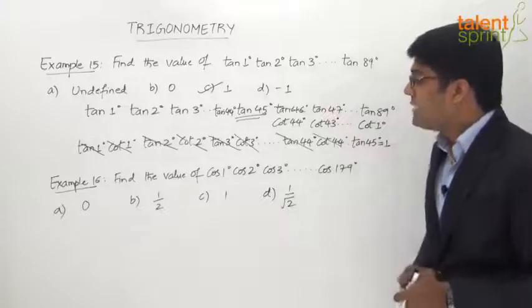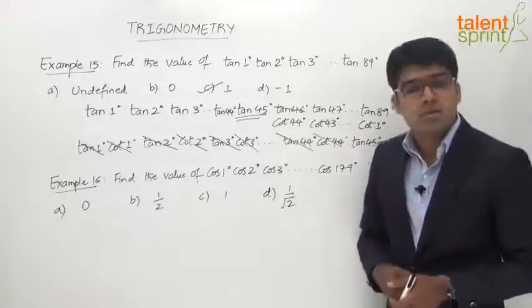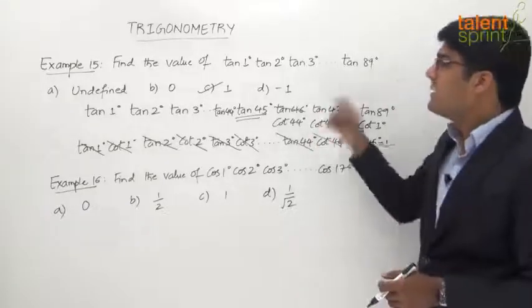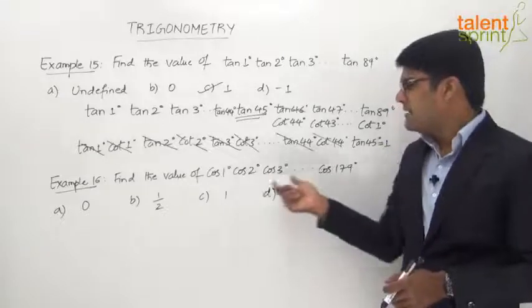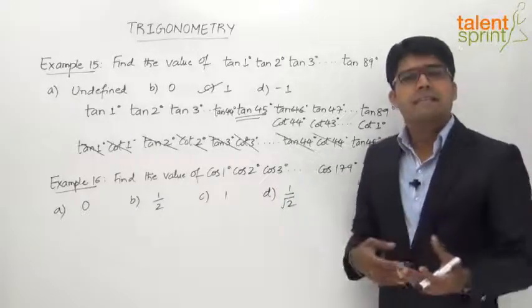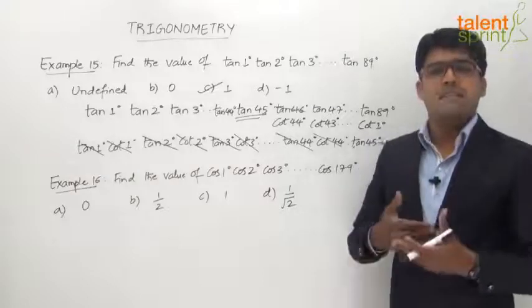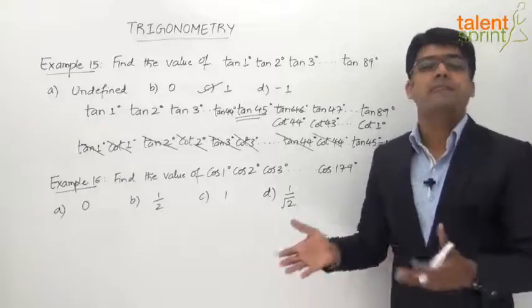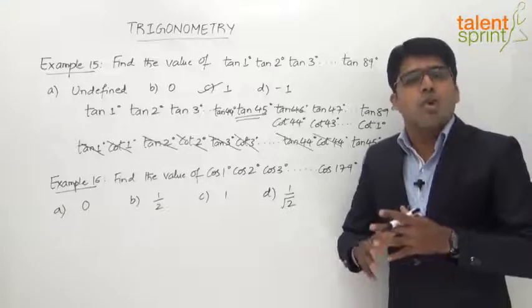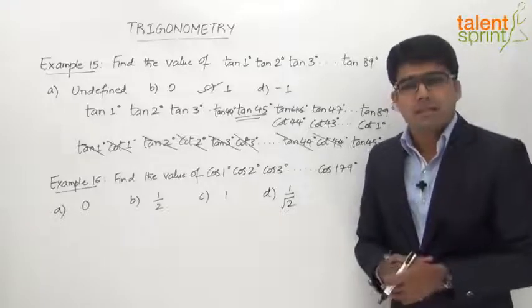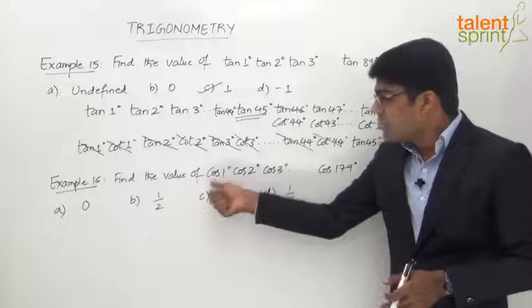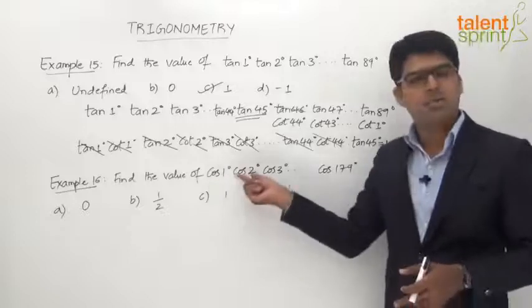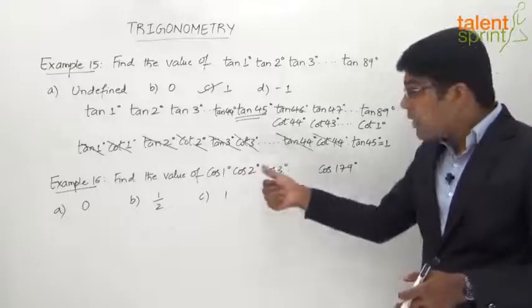Example 16 says: find the value of cos 1° × cos 2° × cos 3° and so on up to cos 179°. Using the idea from the earlier example, we could convert terms — for example, cos 89° = sin 1°, cos 88° = sin 2° — and see if terms cancel. However, instead of doing all those steps, there is a simpler logic: from cos 1° to cos 179° we have a total of 179 terms.